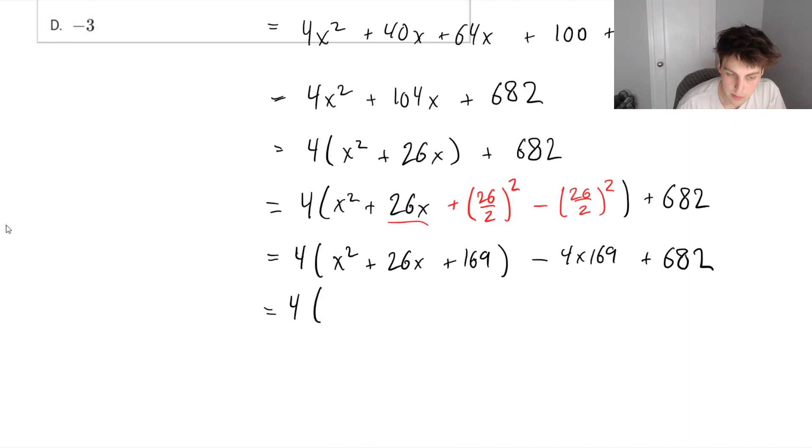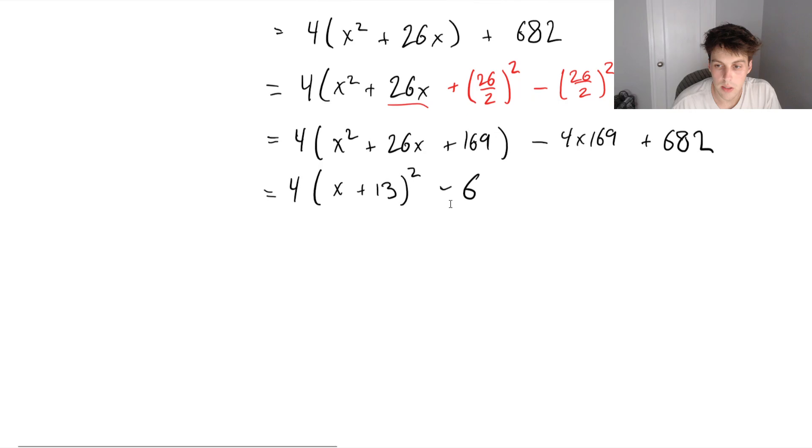And that's going to be x plus 13 squared. And if we do this math here, we'll get 4 times 169 plus 682, it's just going to be 6. So finally, we've completed our square. Looks a lot cleaner now.